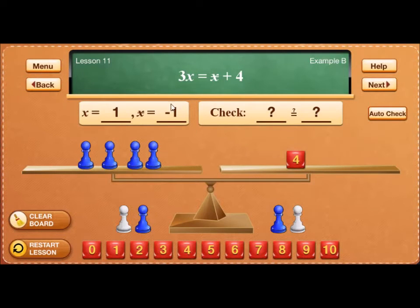In order to do the check, I will reset the original problem, which is 3x is equal to star plus 4.